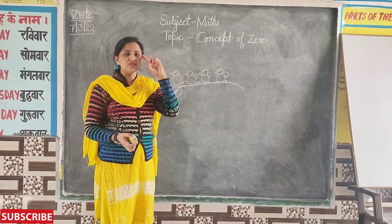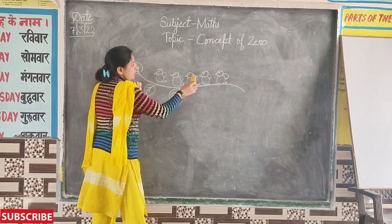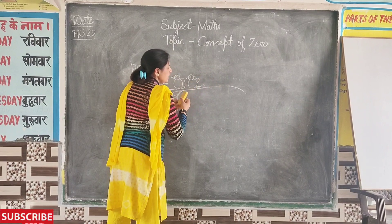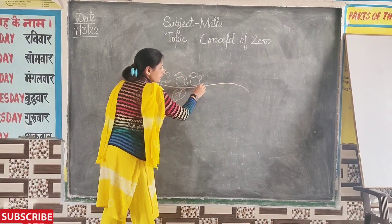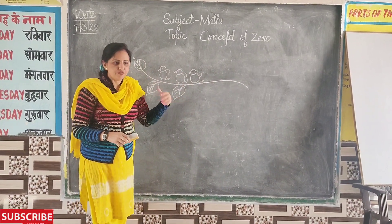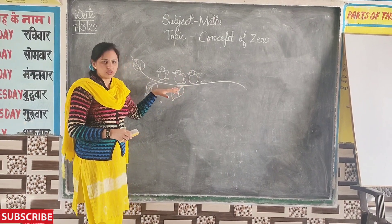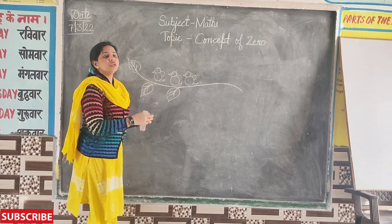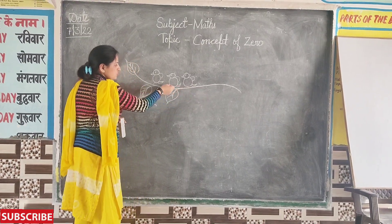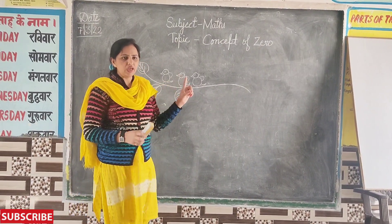Now everybody look at the blackboard and listen to me. Two birds are flying away. So how many birds are left on the tree? Three. One, two, three. Okay.